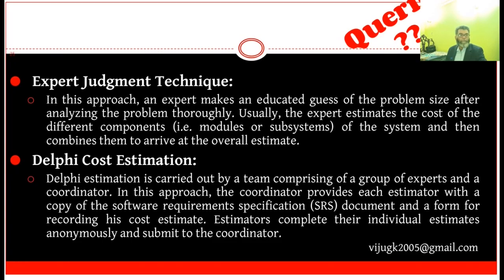There are two classes for heuristic estimation technique: single variable model and multivariable model. In the single variable model, it provides a means to estimate the desired characteristics of a problem using some previously estimated basic characteristics of the software product, such as its size. An example of a single variable model is COCOMO. Multivariable estimation models are expected to give more accurate estimates compared to single variable models, since a project parameter is typically influenced by several independent parameters. For example, the intermediate model of COCOMO is an example for multivariable estimation.